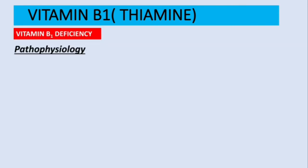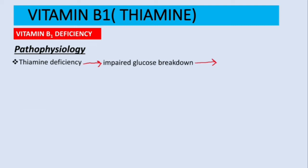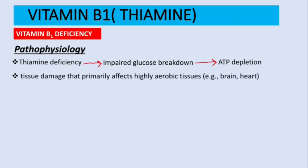Regarding pathophysiology: deficiency of thiamine leads to impaired glucose breakdown, which causes ATP depletion — low ATP. Tissues that are highly aerobic, like the brain and heart, will be primarily damaged. Additionally, high doses of glucose infusions will further increase ATP depletion.